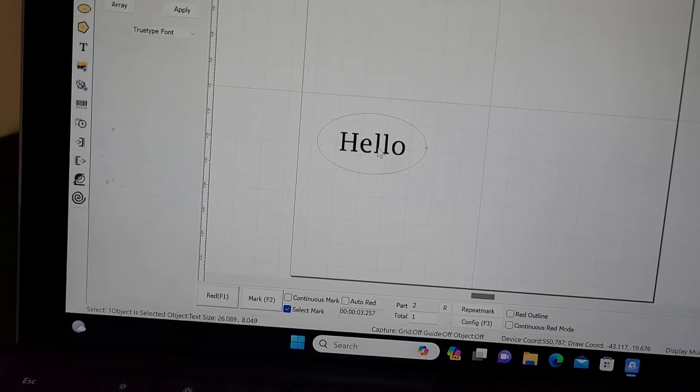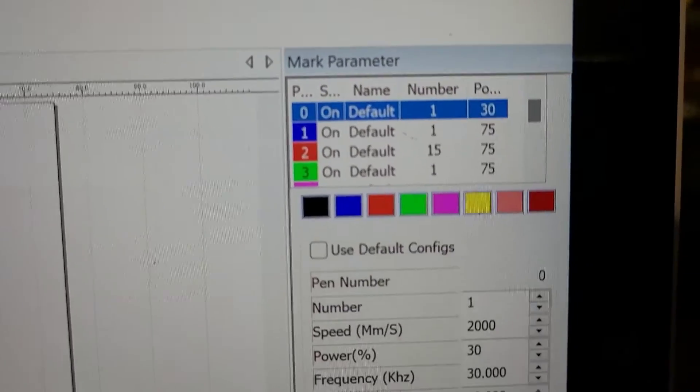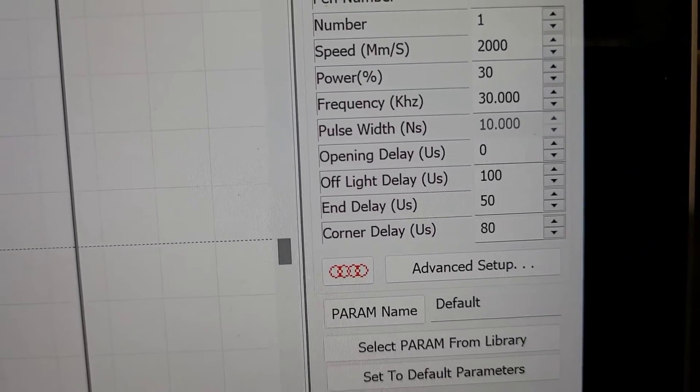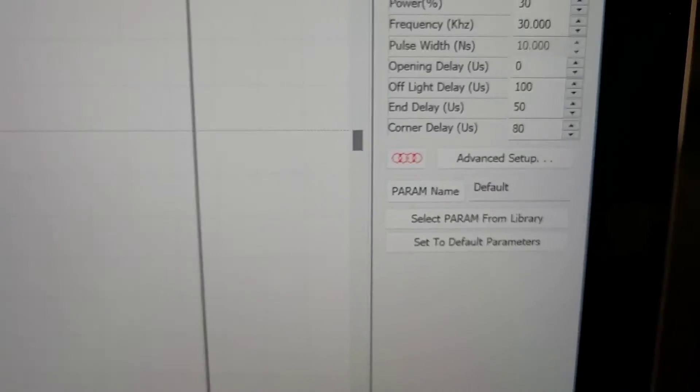And I believe I had all the defaults there for that. For the engraving, this was on my first layer, just did one pass, and I bumped the speed up to 2,000 there and then the power at 30.